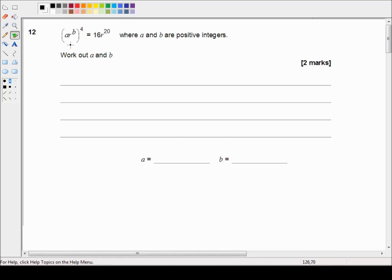Oh my goodness. So this is just a simple test of our law of indices, so (ar^b)^4 is equal to a^4 times r^(4b).